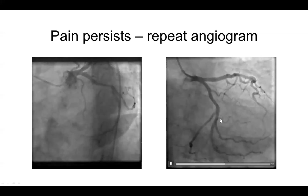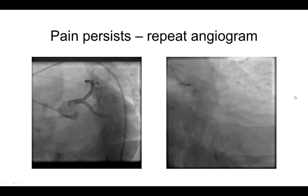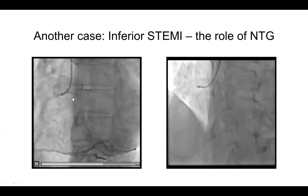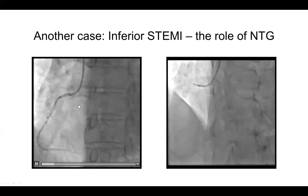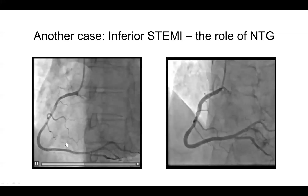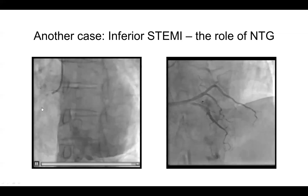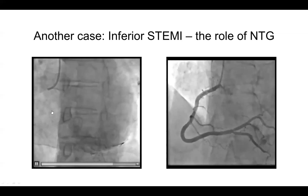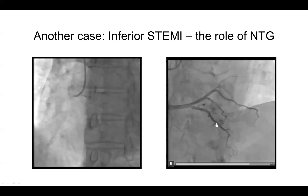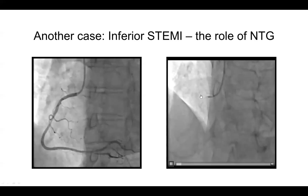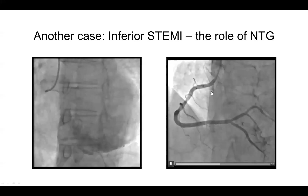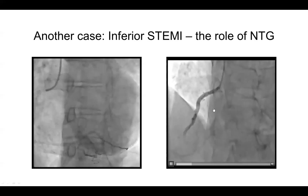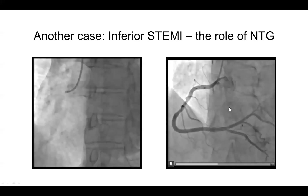This is another case of an inferior ST-elevation myocardial infarction in which the right coronary artery did not demonstrate overt obstructive disease — there was some concern for possible plaque, but there was a dampening upon engagement that worsened as the case proceeded. Following administration of nitroglycerin, it was demonstrated that there was a clear component of spasm, and therefore this was a case of coronary vasospasm consistent with myocardial infarction.